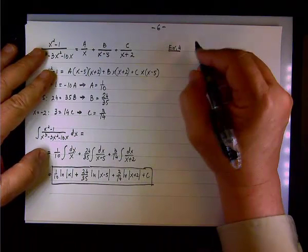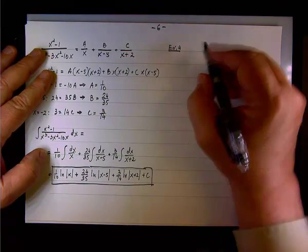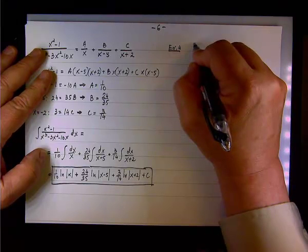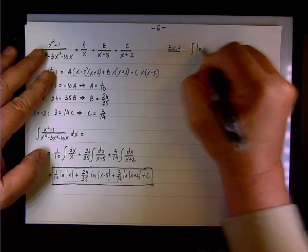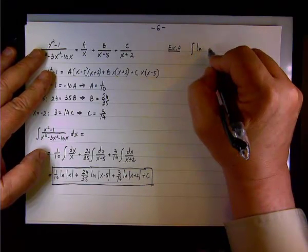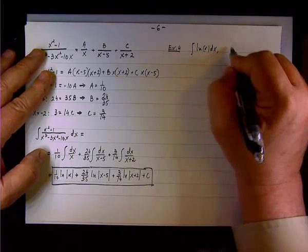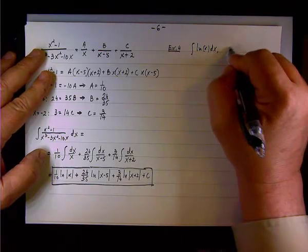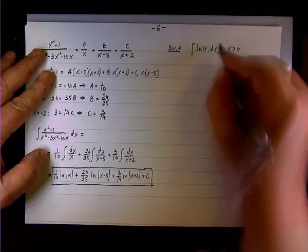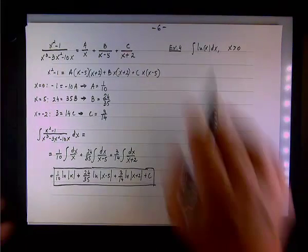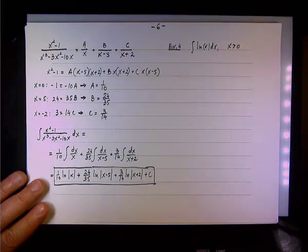We need to evaluate the integral of the natural log of x dx. Here we're going to restrict x to be positive — otherwise we have to put the absolute value.